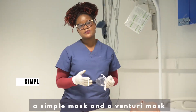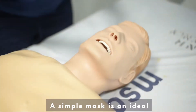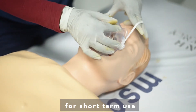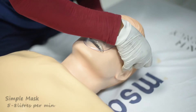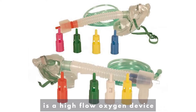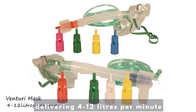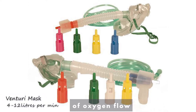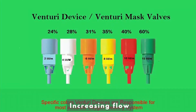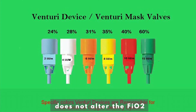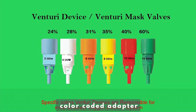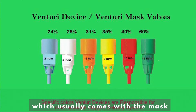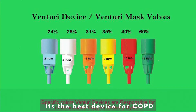Next, we'll talk about a simple mask and a venturi mask. A simple mask is ideal for short-term use and delivers five to eight liters of oxygen per minute. A venturi mask is a high-flow oxygen device delivering four to 12 liters per minute of oxygen flow. Increasing flow does not alter the FiO2. FiO2 is controlled by a different color-coded adapter, which usually comes with the mask. It's the best device for COPD.